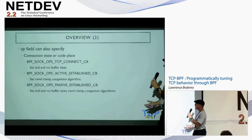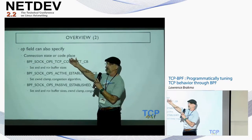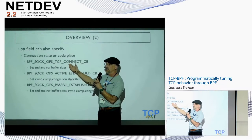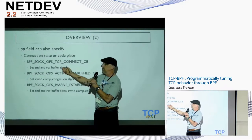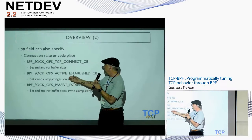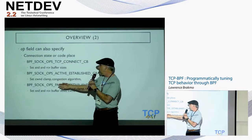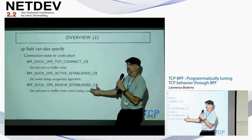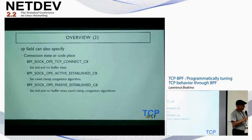The op field can also specify connection state or a place in the code. For example, when we are initially setting up a connection in TCP connect state, we can set the send and receive buffer sizes. Or when the active connection is established, we can set the window clamp or congestion algorithm. The same applies for passive connection establishment. These are the ones supported right now, but there's a lot more coming within the next month or so.